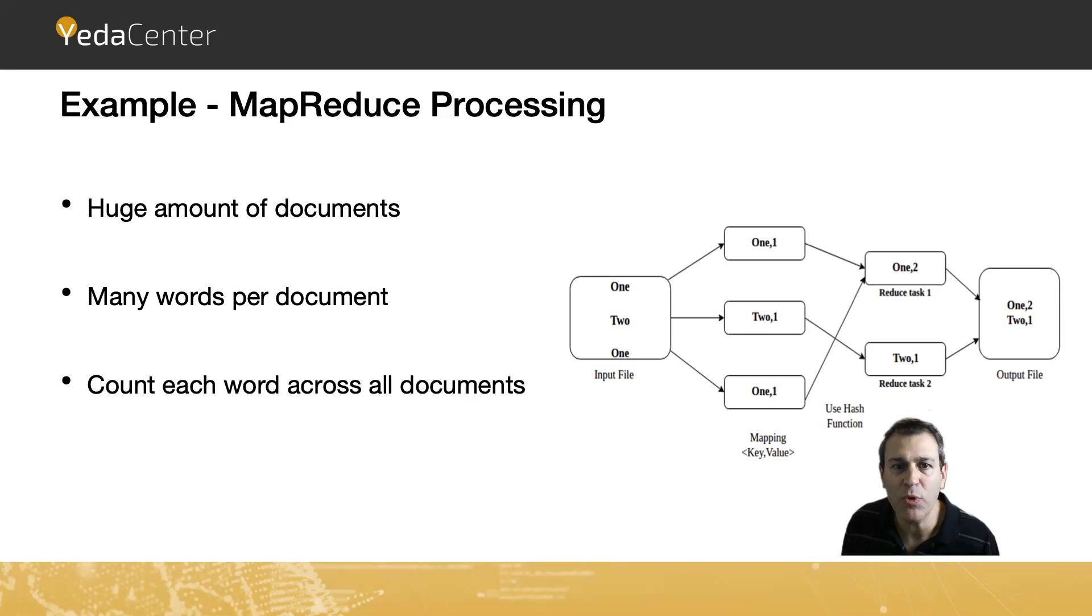The output on each computer would be, for example, the words 'one' or 'two', as we see in this example. In one computer we have one occurrence of 'one', another has one occurrence of 'two', and the third has one occurrence of 'one'. On each computer we calculate how many times we had each type of word.